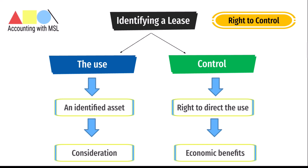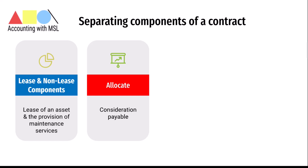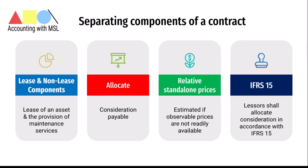Where a contract contains both a lease component and non-lease components — for example, a lease of an asset and the provision of a maintenance service bundled together — the lessee is required to allocate the consideration payable on the basis of relative standalone prices, which shall be estimated if observable prices are not readily available. A lessee may elect by class of underlying assets not to separate non-lease components and to account for everything as a single lease. Lessors are required to allocate consideration in accordance with IFRS 15.